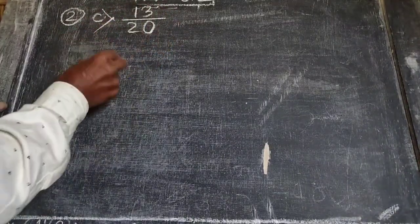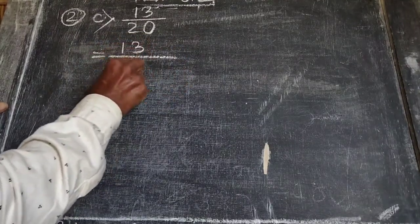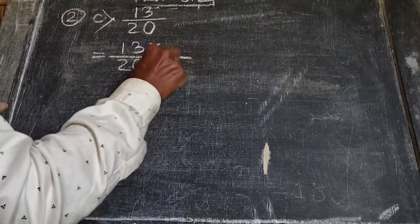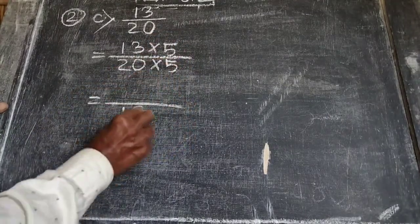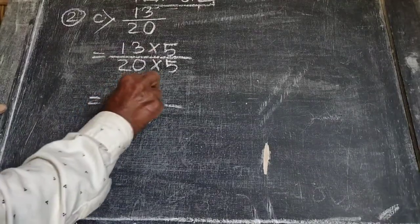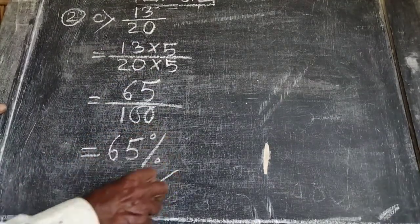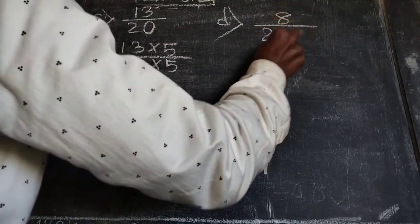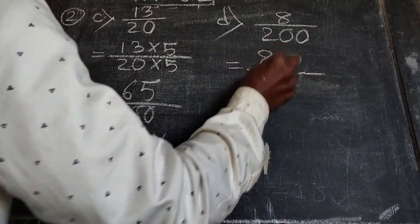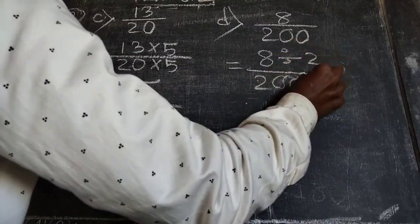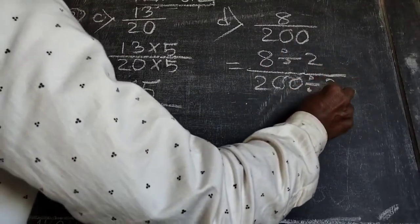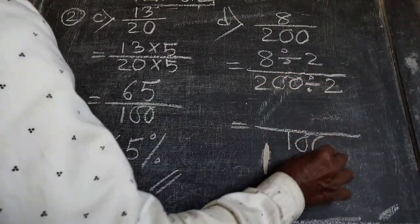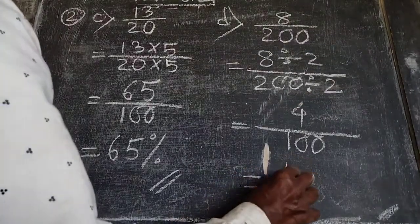Next, (c) 13 by 20 — we multiply numerator and denominator by 5, giving 20 into 5 equals 100, and 13 into 5 equals 65. So it is 65 percent. (d) 8 by 200 — we divide by 2 to get 100 in the denominator: 200 divided by 2 is 100, and 8 divided by 2 is 4. So it is 4 percent.